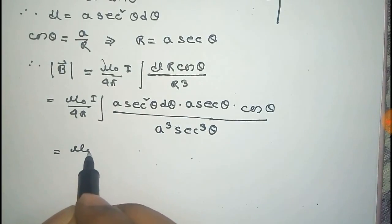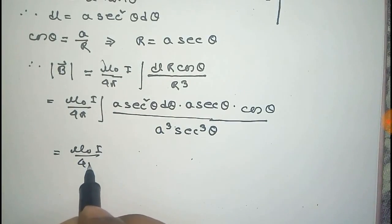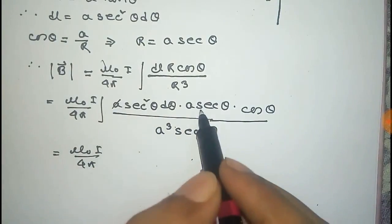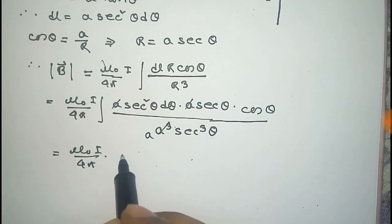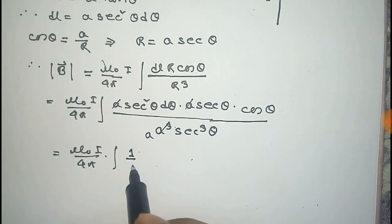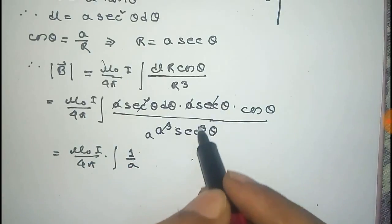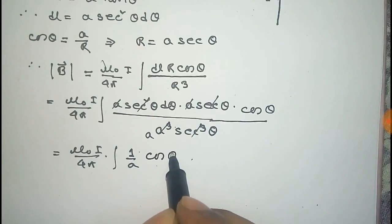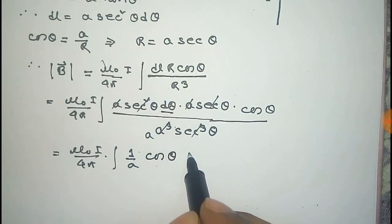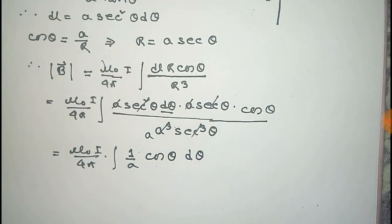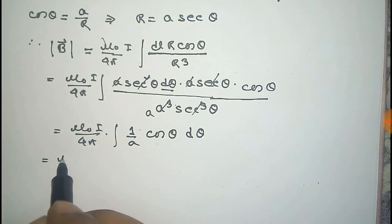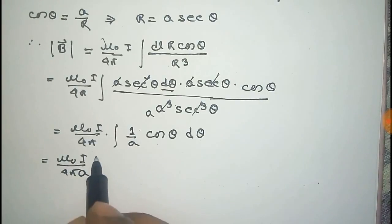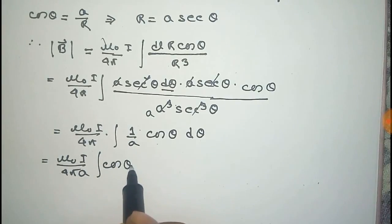That equals mu0·I by 4pi. Here, A and sec² cancel out, leaving 1 by A. The cos(theta) and sec(theta) cancel, leaving only cos(theta) with dθ. Since 1/A is also a constant it comes out, giving mu0·I by 4pi·A times integral of cos(theta) dθ.